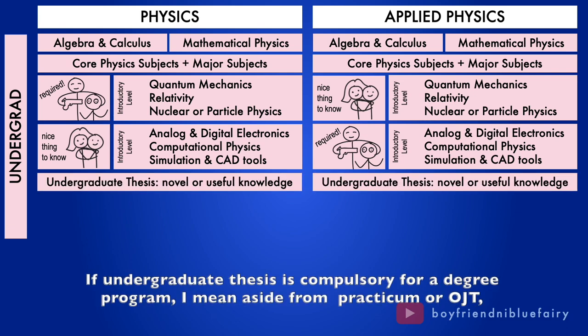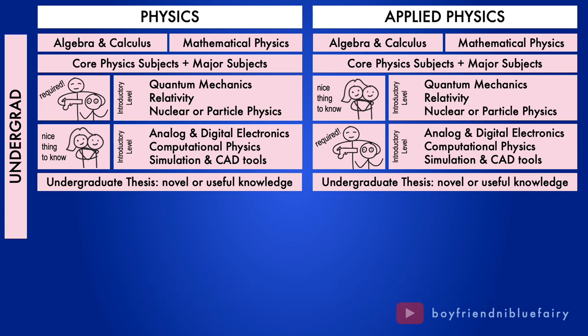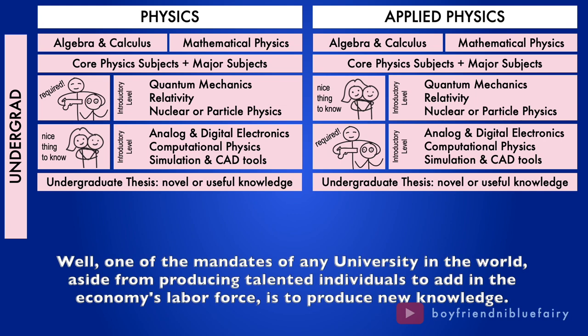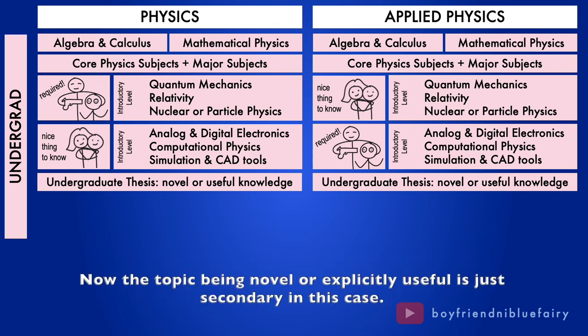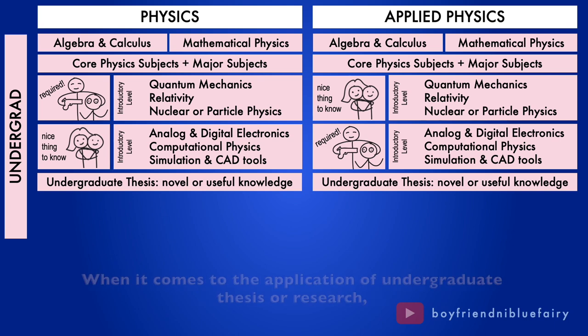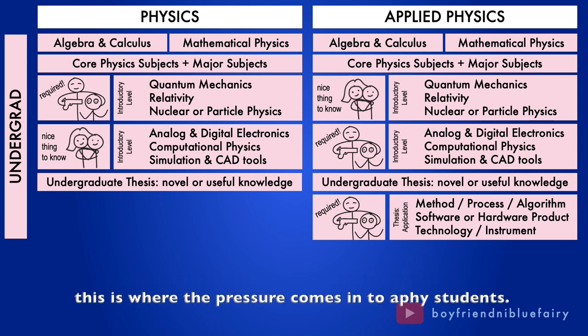If an undergraduate thesis is compulsory for a degree program, I mean aside from practicum or OJT, then a minimum requirement for your thesis or research is that it must be able to produce a new knowledge. Well, one of the mandates of any university in the world, aside from producing talented individuals to add in the economist labor force, is to produce new knowledge. That's why one of the benchmarks of the top 100 university rankings in the world is the annual number of publications a university can produce. Now, the topic of being novel or explicitly useful is just secondary in this case.